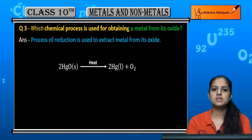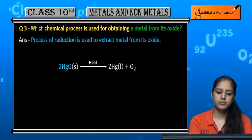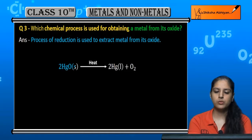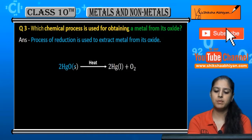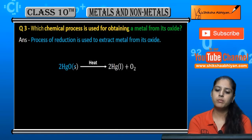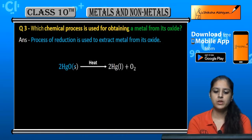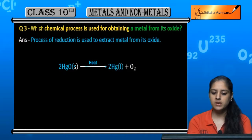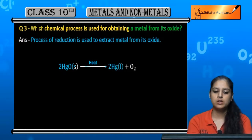For example, if we have 2HgO, mercury oxide, this is an oxide form. We need mercury, so we have to heat it. HgO converts into Hg.